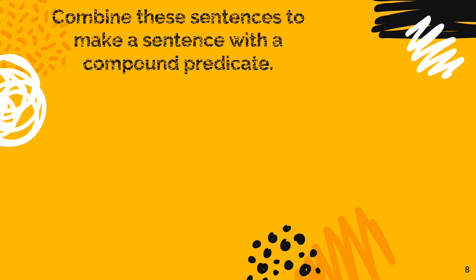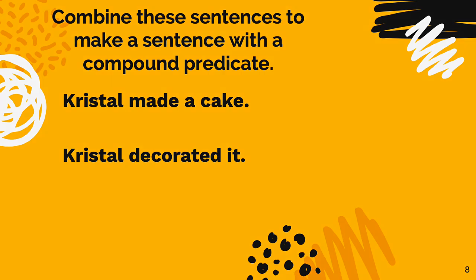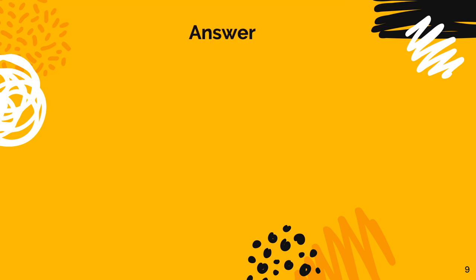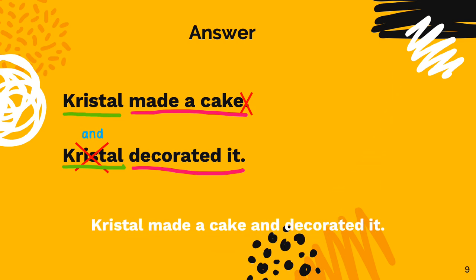Let's practice some more examples. Let's look at these two sentences: 'Cristal made a cake' and 'Cristal decorated it.' Pause this video and combine these sentences to form one sentence with a compound predicate. In these two sentences, Cristal is the subject, and 'made a cake' and 'decorated it' are the predicates. We combine them by taking out the second Cristal — because we do not want to repeat the subject — and removing the period after 'cake' and inserting 'and' to make: 'Cristal made a cake and decorated it.'